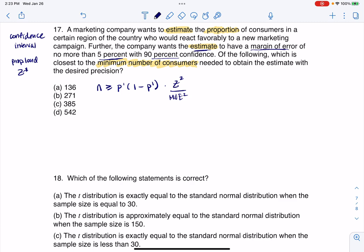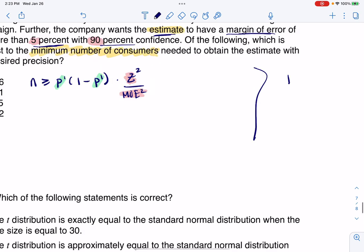Now, let's go one at a time. 90% confidence means Z is going to be 1.645, right? I know 5% margin of error, so I'm going to put 0.05 down here. Now, in terms of P prime, we were not given any sample proportion. So what we default to in stats is we say...